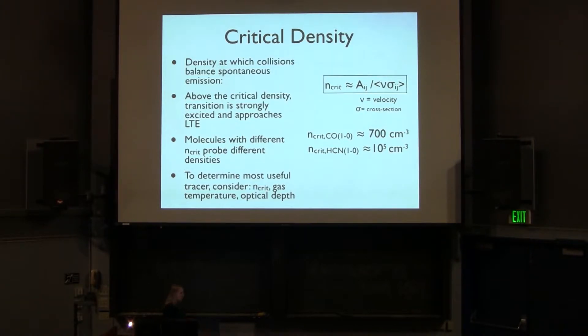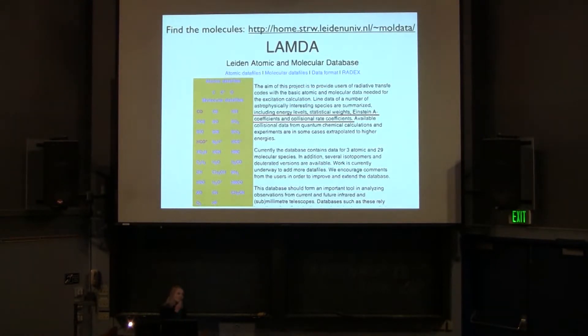So then if you're trying to do a problem where you're post-processing the simulation, you want to determine the most useful tracer. You might consider what is the critical density of the gas, what range of densities do you want to model, what is the local gas temperature in the simulations, and what is the optical depth. This is a lot of work, so you might also just ask an observer about what tracers they're using for a particular regime.